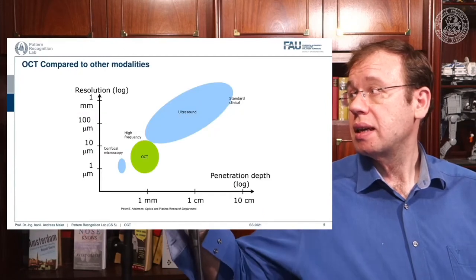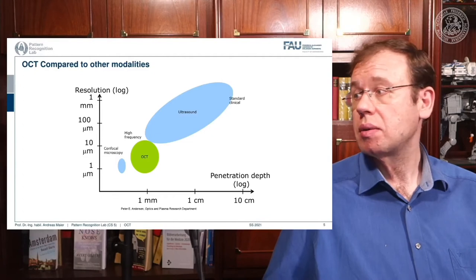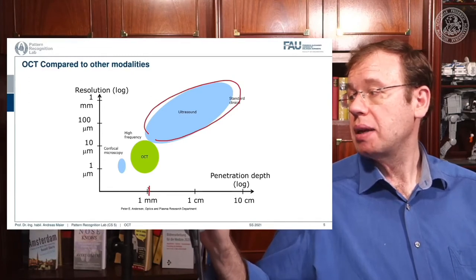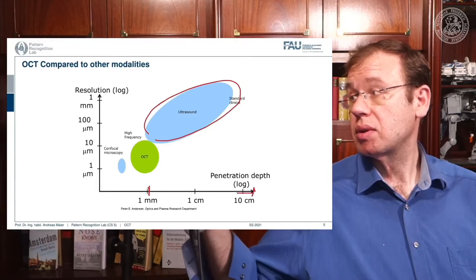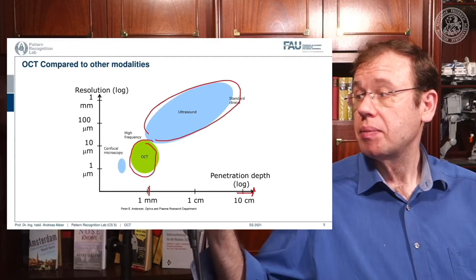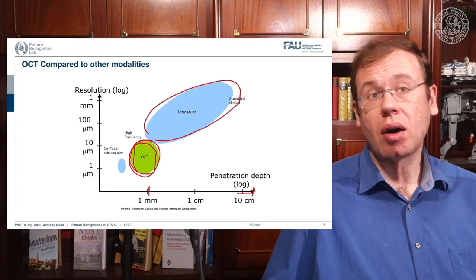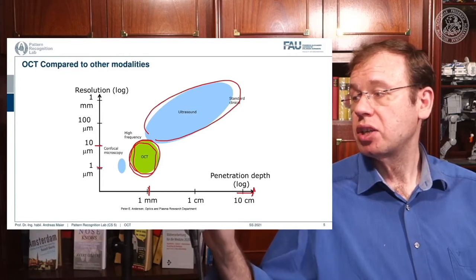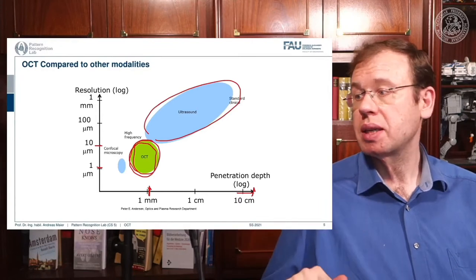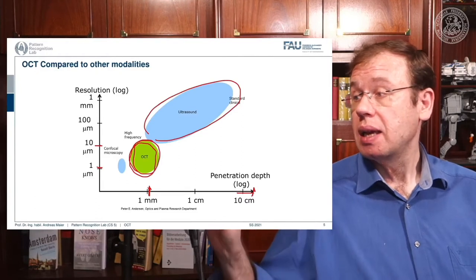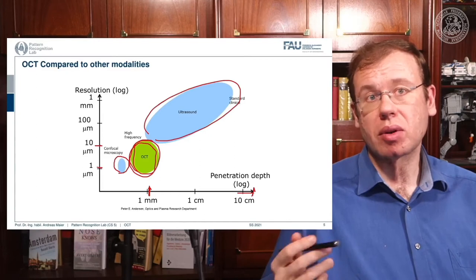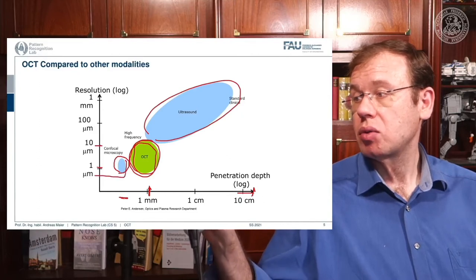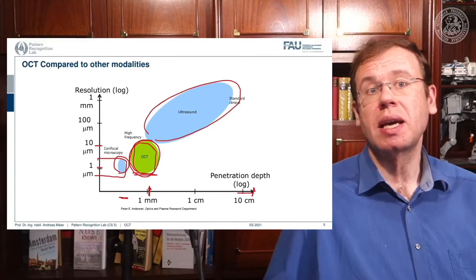There is a certain regime where OCT is operating. Ultrasound has penetration depths from millimeters to centimeters or even 50 centimeters. OCT operates in the resolution range between 1 and 10 micrometers, with penetration depth below approximately one millimeter — we can't image very deep into the tissue. Confocal microscopy requires tissue extraction but achieves very high resolution, placing OCT in a similar regime to microscopy.